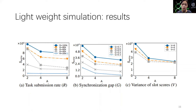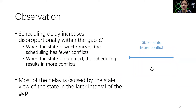Based on the simulation results, task submission rate, slot scores, and synchronization gap are the main factors that contribute to conflicts. We cannot change task submission rate as it is determined by the workloads. Our solution focuses on slot quality and staleness of the local states. We found that scheduling delay increases disproportionately within the gap G. When the cluster state is just synchronized, it is fresher and scheduling has fewer conflicts. But when the state becomes more outdated towards the end of a gap G, scheduling decisions result in more conflicts. Conflicts lead to rescheduling, which may in turn result in new conflicts, and hence rescheduling recursively. Most of the delay is disproportionately caused by the stale view of the cluster state in the later interval of gap G.